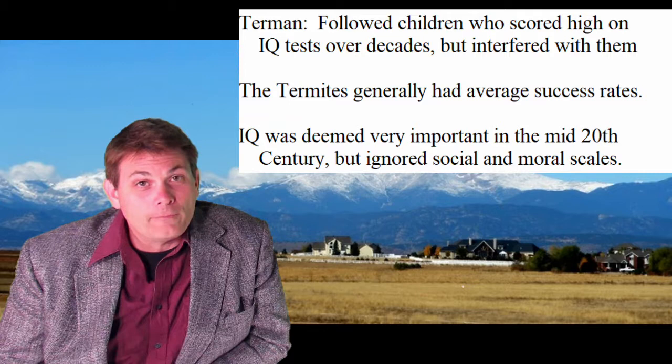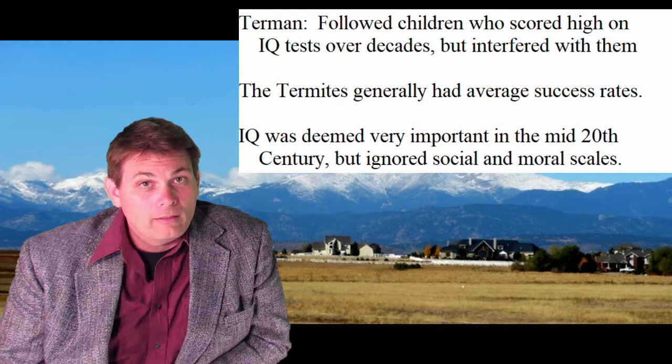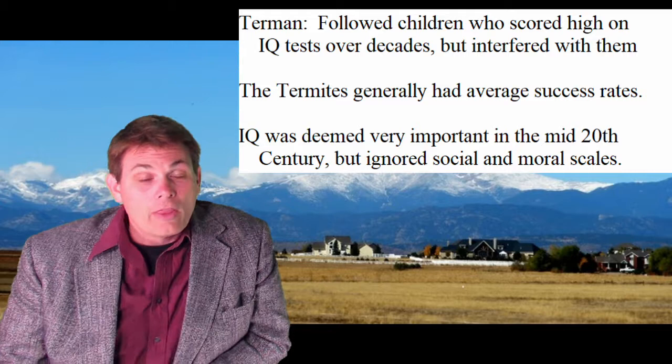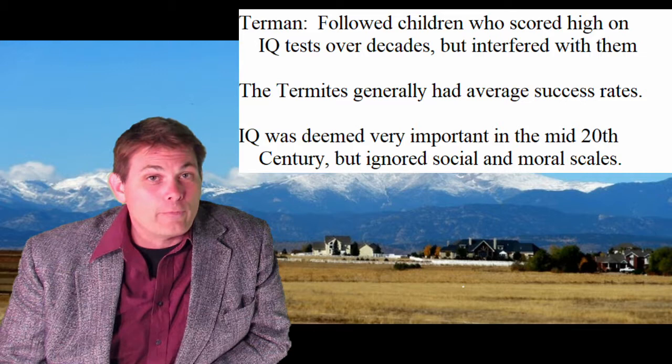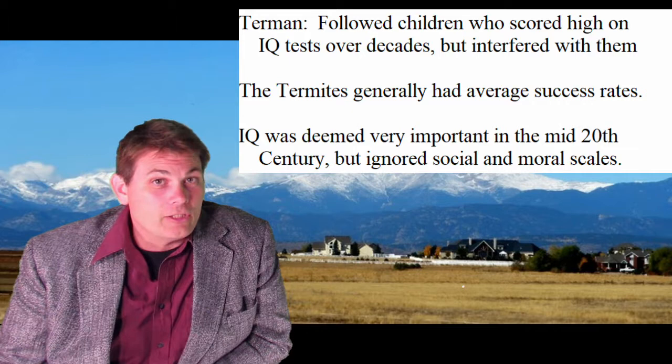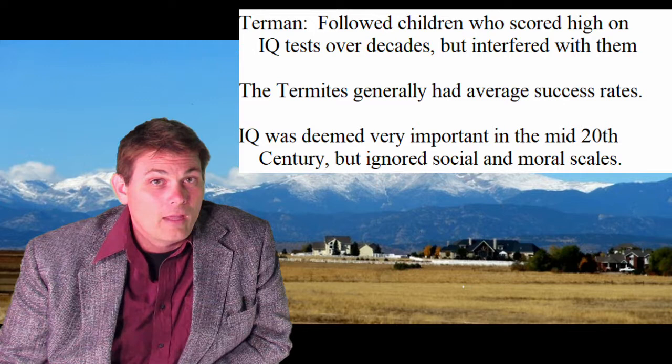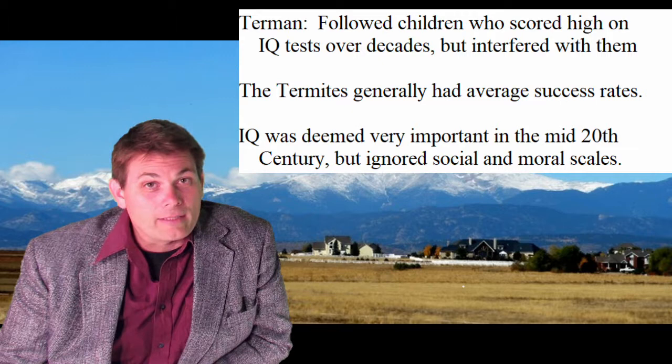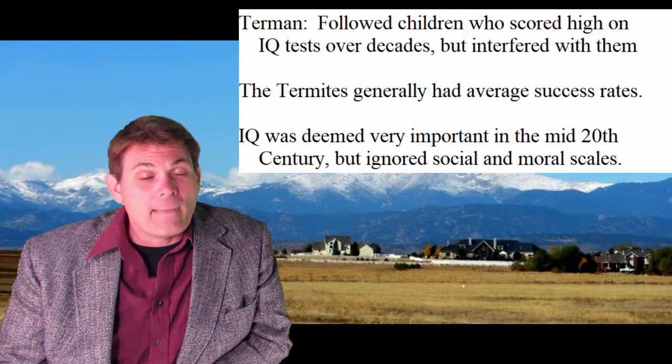Another researcher named Terman decided he was going to follow a lot of kids he gave IQ tests to, and when they did well, he would follow them through the rest of their lives to see if they achieved higher success. The problem with Terman's study is that these 'termites,' as they were called — he would interfere with their lives. For example, one termite who got caught stealing a car and was in front of a judge — Terman himself went to that judge and said this person is in his study with a really high IQ. The judge let him off with a slap on the wrist. He interfered with the study and gave it major validity issues.